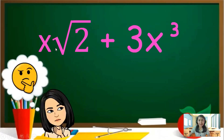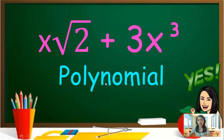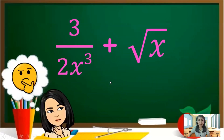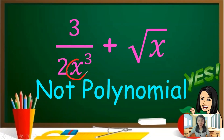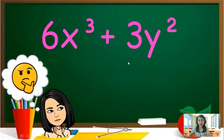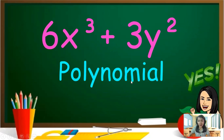Another example: x times the square root of 2 plus 3x cubed — this is polynomial, it didn't break the rules. Next, 3 over 2x cubed plus square root of 2x — this is not polynomial because we have the variable x on the denominator and also a radical sign on our variable. And 6x cubed plus 3y squared — the answer is polynomial.